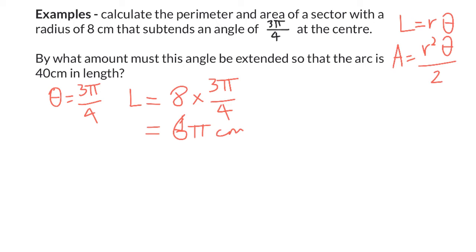Now, if having a look at the area, our area here is going to be one half times 8², which is my radius, times 3π over 4.